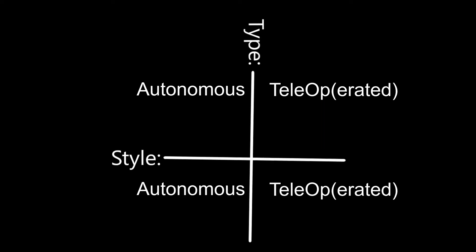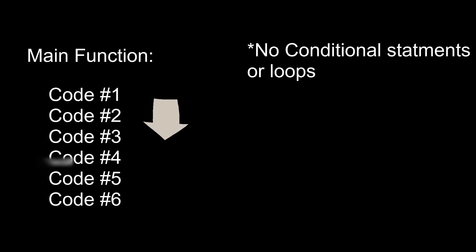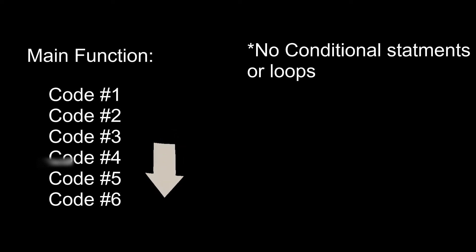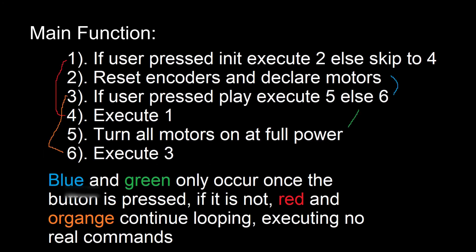You now know about the two types of op-modes. However, each type can also be programmed in two unique styles. The two styles are called linear and iterative. Linear more closely resembles a standard program flow. There is one function where you write all your code. The code creates custom loops and if-statements to manage the program flow, based on whether the program is stopped, initialized, or started.